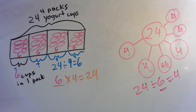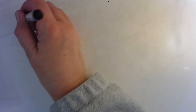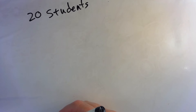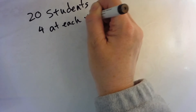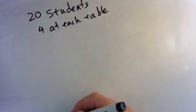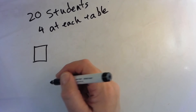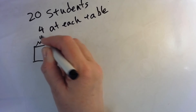Let's try one more. A classroom has tables that seat a total of 20 students. Four students are seated at each table. How many tables are in the classroom? Let's draw and label a tape diagram. Here's one table, and this represents four students.